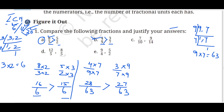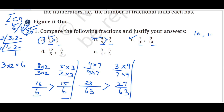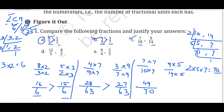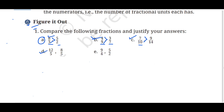For part C, we have 7 upon 10 and 9 upon 14. We take the LCM of 10 and 14. Factoring: 2 × 5 = 10, 2 × 7 = 14. LCM is 2 × 5 × 7 = 70. For 7 upon 10: multiply by 7 to get 49 upon 70. For 9 upon 14: multiply by 5 to get 45 upon 70. Since 49 is bigger than 45, 7 upon 10 is greater than 9 upon 14.